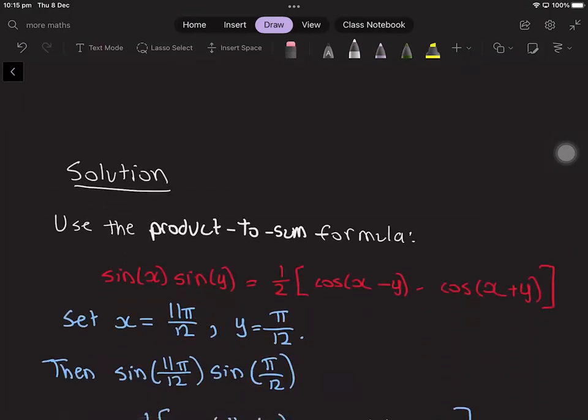I've written down one of the product to sum formulas. This is for sin x times sin y, and this is equal to half times cos of x minus y minus cos of x plus y.